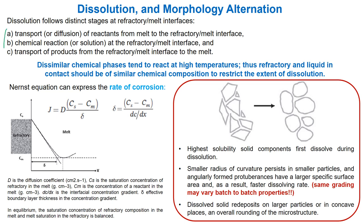The stages include: transport or diffusion of reactants from melt to the refractory-melt interface, and chemical reactions or dissolution at the refractory-melt interface. Dissimilar chemical phases — for example acidic and basic — tend to react at high temperatures. Thus, refractory and liquid in contact should have similar chemical composition to restrict the extent of dissolution.